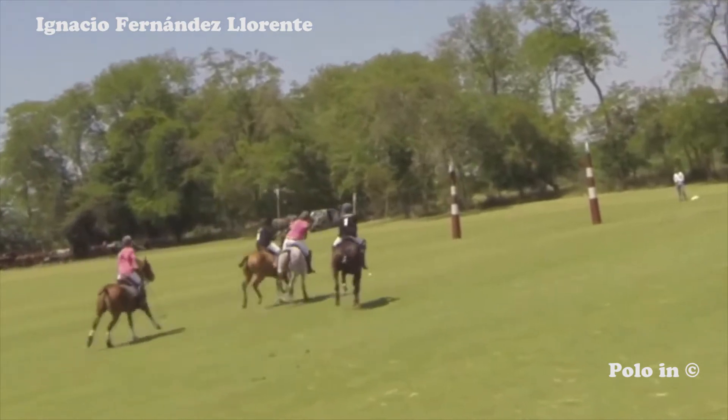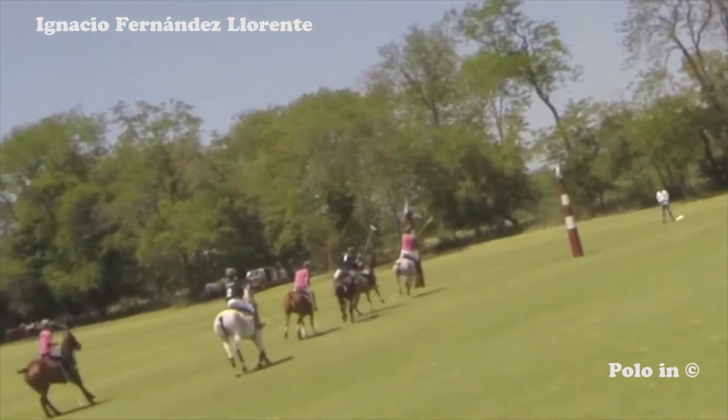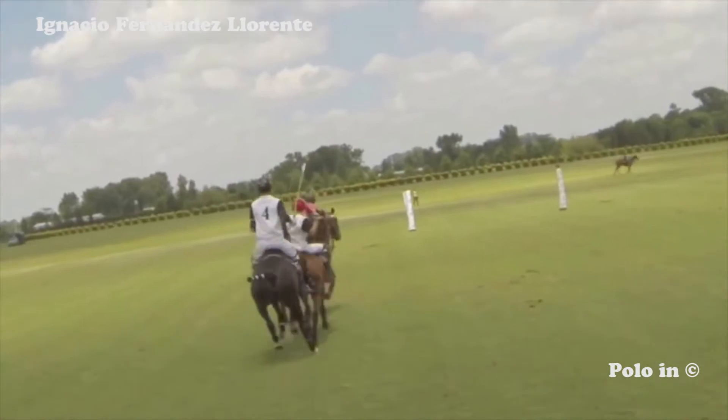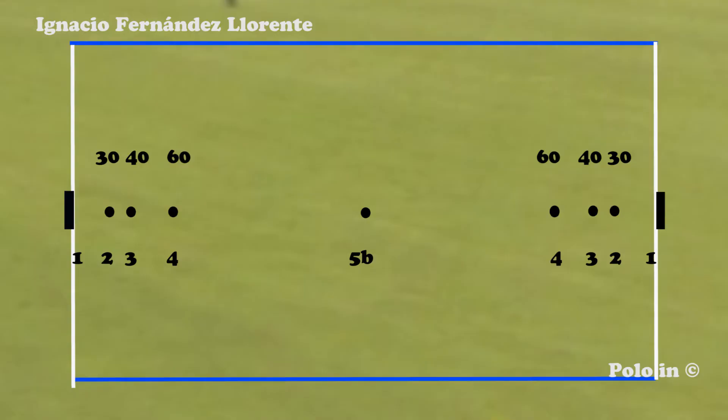Here are two more examples of penalty number one. We see in this graph the places where penalties are shot from: 30 yards away from the goal — penalty number two; 40 yards — penalty number three; 60 yards — penalty number four; from anywhere on the field — penalty 5A; from the center — 5B; a corner penalty, or six, from 60 yards from the spot where the ball went out, but no more than 40 yards away from the center.